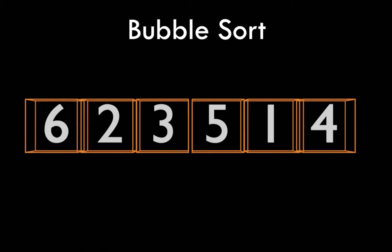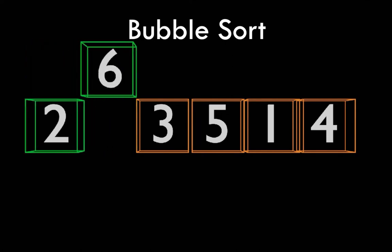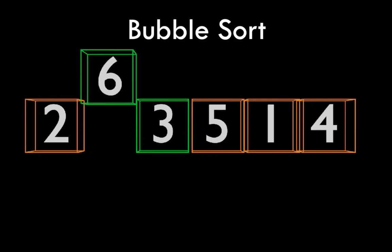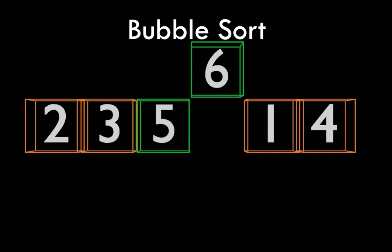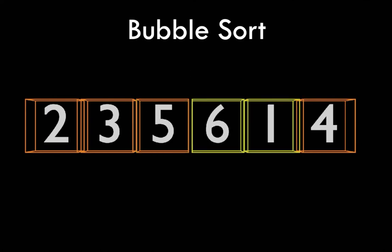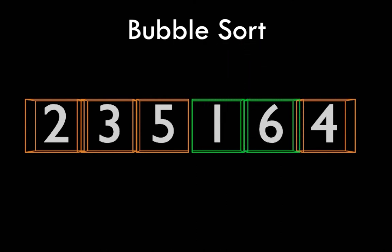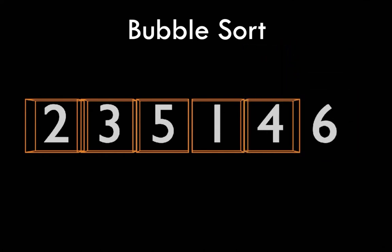Let's see this in action. We're going to look at the first element, which is six, and we're going to have an ascending list. Six is compared to two — six is greater than two so we make a swap. Six is then compared with three — six is greater than three so we make a swap. Six is compared with five — six is greater than five so we make another swap. Six is greater than one so we make another swap. Six is greater than four so we make another swap. This is the first pass and you'll see that six has bubbled its way up to the top of the list.